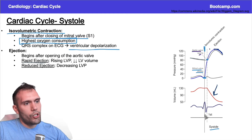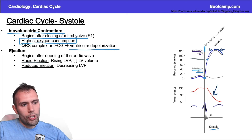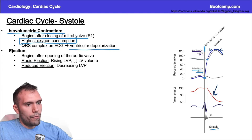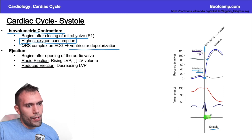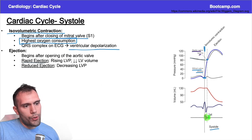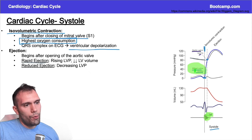The first part of the ejection is the rapid ejection phase; the second part is the reduced ejection phase. The rapid ejection phase has the most negative slope in the left ventricular volume curve. The S1 heart sound is represented by a squiggly line, happening when the mitral valve closes to start this whole process.